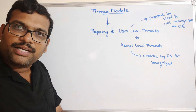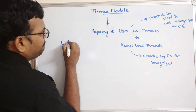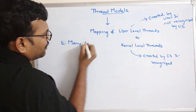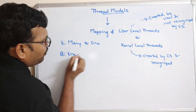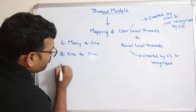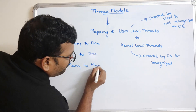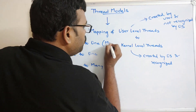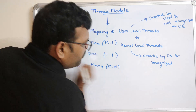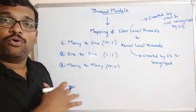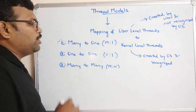There are three different thread models to map user level threads to kernel level threads. The first model is many-to-one, the second is one-to-one, and the third is many-to-many — simply called M-to-one, one-to-one, and M-to-N. These are the three different models used to map user level threads to kernel level threads. We will see them one by one.